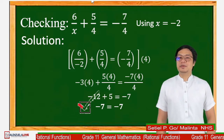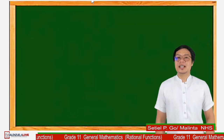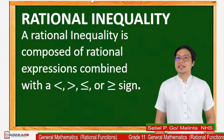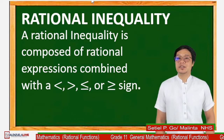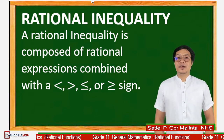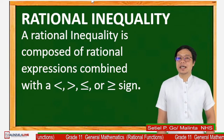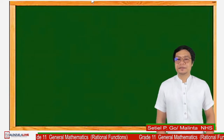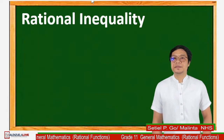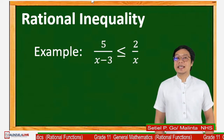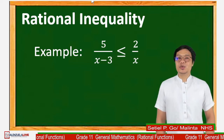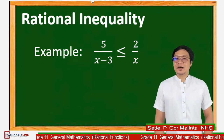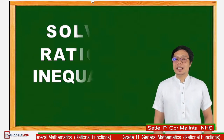This time, we will discuss the concept of rational inequalities. What are rational inequalities? A rational inequality is composed of rational expressions combined with the following symbols: less than, greater than, less than or equal, or greater than or equal signs. For example: 5 over (x − 3) is less than or equal to 2 over x. This is an example of a rational inequality.